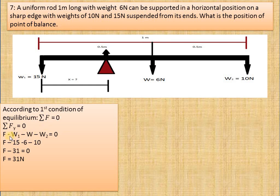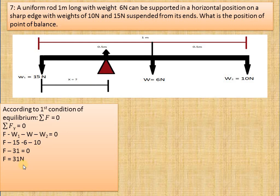The edge force is positive because it is in the positive y-axis direction, and the weights are negative because they are in the negative y-axis direction. Putting in the values: weight 1 is 15, weight of rod is 6, weight 2 is 10. When we solve it, we get the sharp edge balancing force equal to 31 newton.